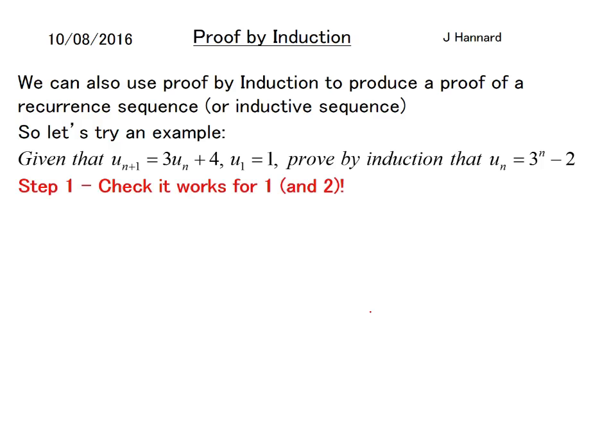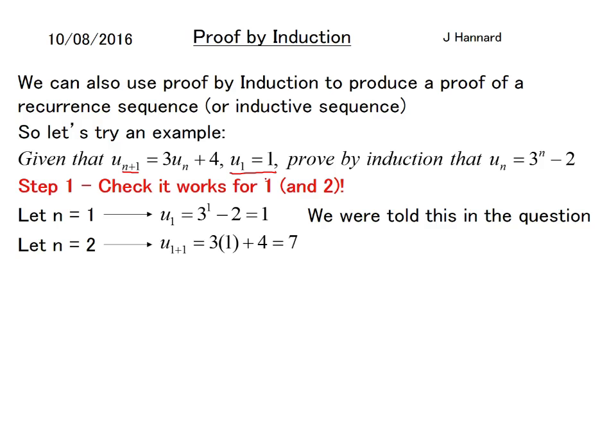So here we go. Check that works for one and two. Because remember, we need n plus one and we need n. So let n equal one. Therefore, u_1 equals 3^1 - 2, which is one. And we are told that u_1 is one. Let n equal two. So u_(1+1), which is 2, equals 3 times 1 plus 4, which equals 7. So it works for one and two.